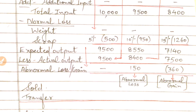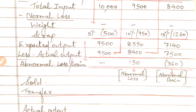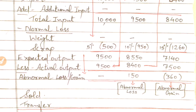The expected output is 8,550 units. The actual output given in the question for Process 2 is 8,400 units. So we calculate 8,550 minus 8,400 = 150. Since this is a positive figure of 150, it is called abnormal loss. The second process output of 8,400 will become the input for the third process.